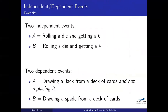Rolling a die and rolling a die again is a good example of independent events. If I roll a six and then roll a four, those events have nothing to do with each other. Another good example: if I flipped a coin 10 times and got heads every time, a lot of people think they should get tails next. But that 11th flip still has a 50% chance of heads and 50% tails. It doesn't matter what happened beforehand — those events are independent of each other.